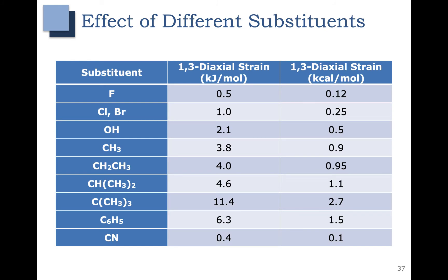What happens if we change up that methyl group with something else? This slide shows the effect of different substituents on strain. In this first column, you see 1,3-diaxial strain measured in kJ per mole, and in this column over here, you see it measured in kcal per mole. If we have a small substituent like fluorine, you can see that this has very little strain at 0.5 kJ per mole. As the size of the atom increases, you can see that the 1,3-diaxial strain also increases. When we get down to something like a methyl group, this value is 3.8 kJ per mole. As that group gets bulkier and we add carbons and hydrogens, that increases. The t-butyl group here is particularly strained at 11.4 kJ per mole.